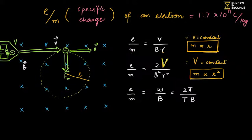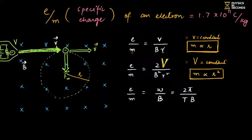A question: if we increase the Potential Difference, will the Charge to Mass Ratio increase or decrease? It will remain constant — the same. Increasing potential increases the electron's velocity, and with velocity the radius changes. But Charge to Mass Ratio is a constant factor; it does not change with potential, magnetic field, or any other factor. Only radius, velocity, and time period change.